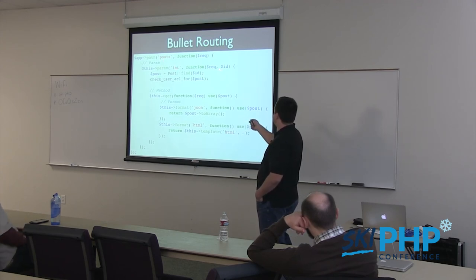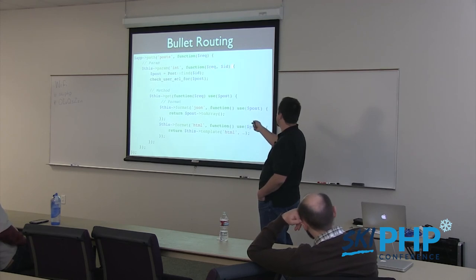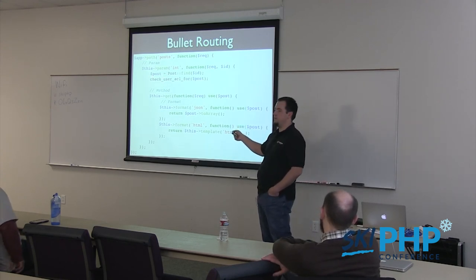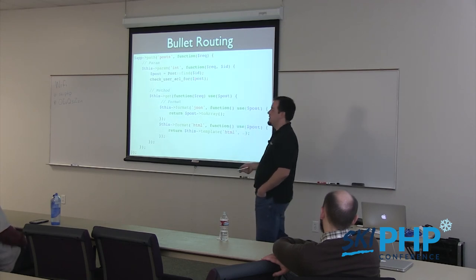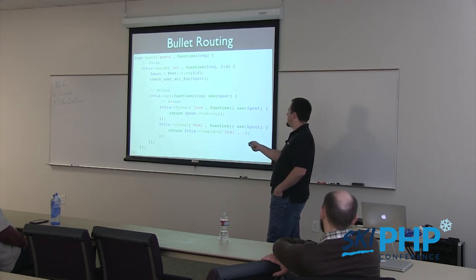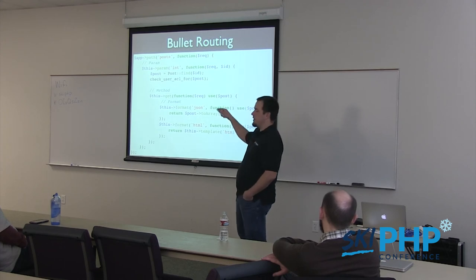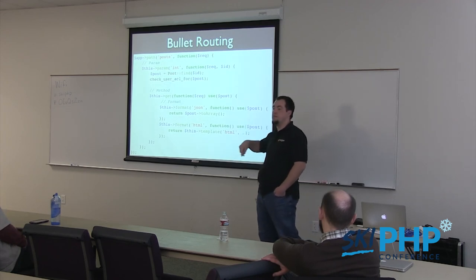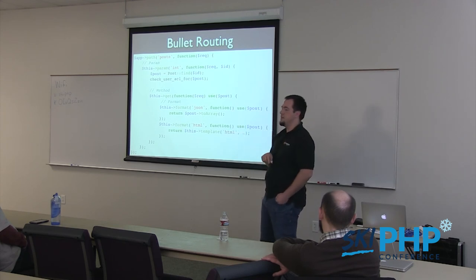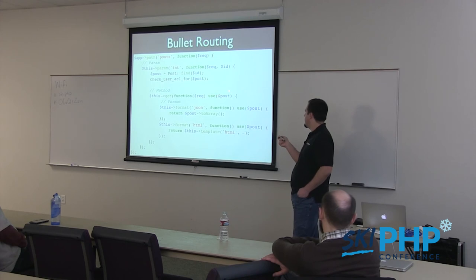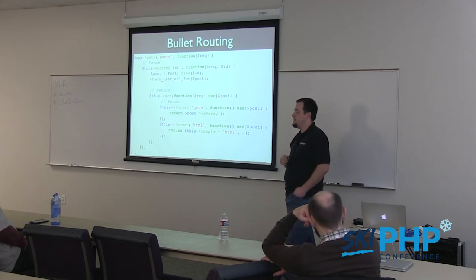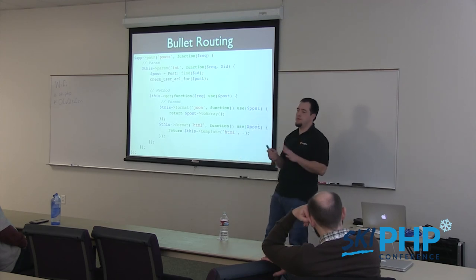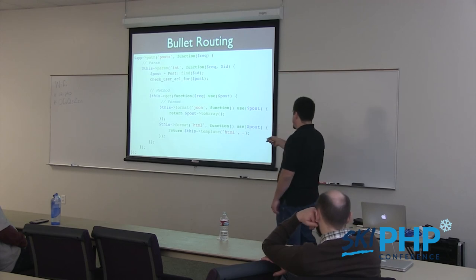With the post integer param route, the param is passed in as request->param. Then I just use that to find a post, check if it's not found - return 404 - check your user ACLs or whatever. Then I can define method handlers: get, post, put, delete. That post object is only ever loaded once - I don't have to load it in every single route handler. That's probably the main asset. You leverage PHP's closure behavior and just use that variable.